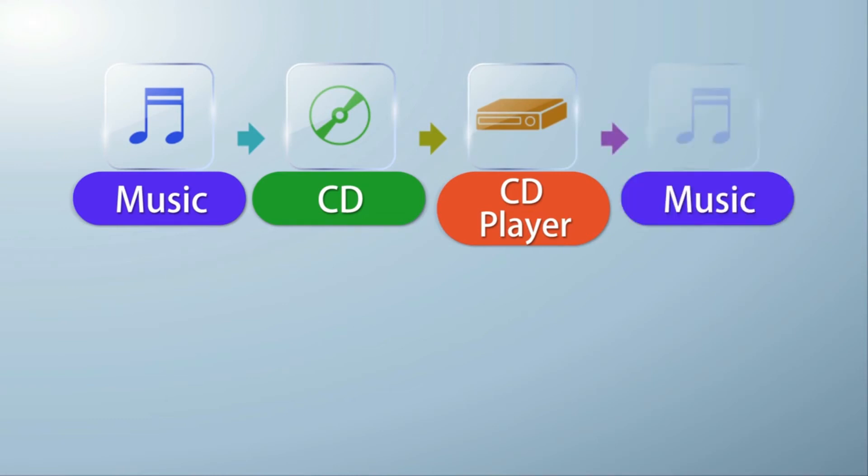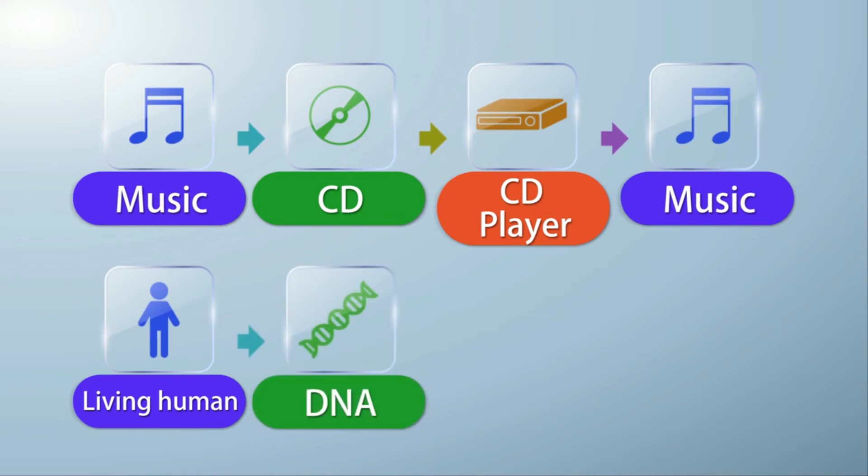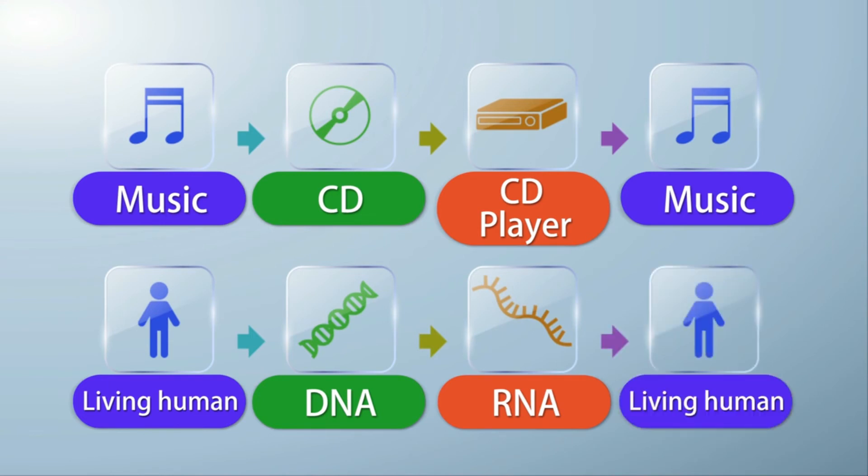In the case of human life, the instructions for making the proteins that the body requires are encoded into our DNA. These instructions are then read by RNA, which facilitates the synthesis of the proteins required to sustain life.